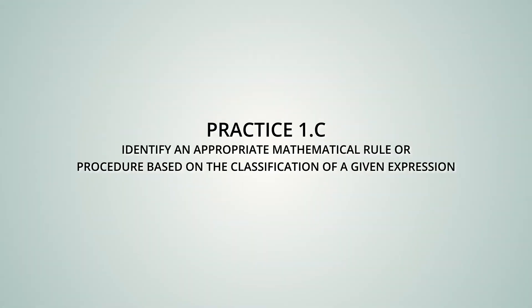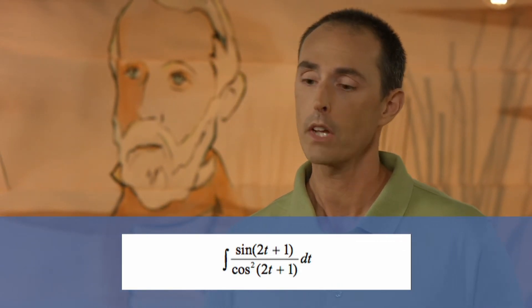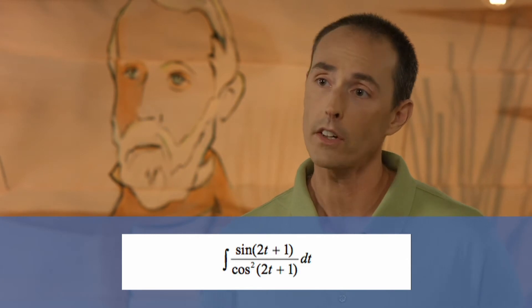Here's another integral for students to look at. The reason I like this one is because it addresses mathematical practice number 1c: identify an appropriate mathematical rule or procedure based on the classification of a given expression. Give them the integral of the quotient of sine of 2t plus 1 in the numerator over cosine squared of 2t plus 1 dt. Because we are in section 4.7, sometimes students become creatures of habit. They think they see a quotient of two functions, so there's got to be some way that this will result in a natural log.